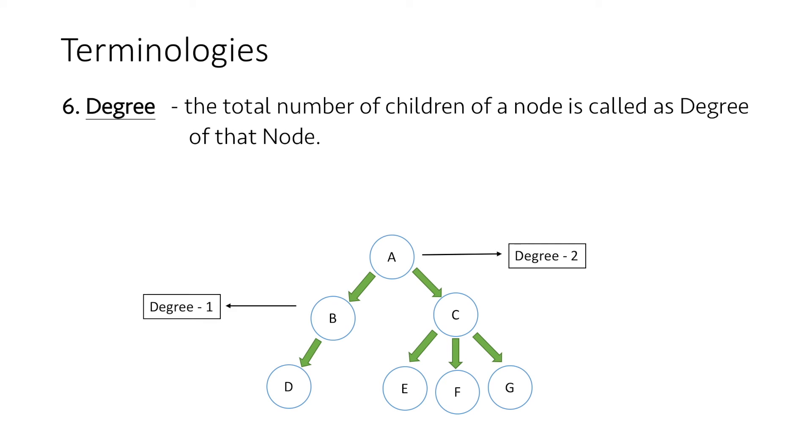The degree of node B is 1 as it has only one child node, D. The degree of node C is 3 as it has three children E, F, and G. And lastly, the degree of nodes D, E, F, and G is 0 as they don't have any child nodes.